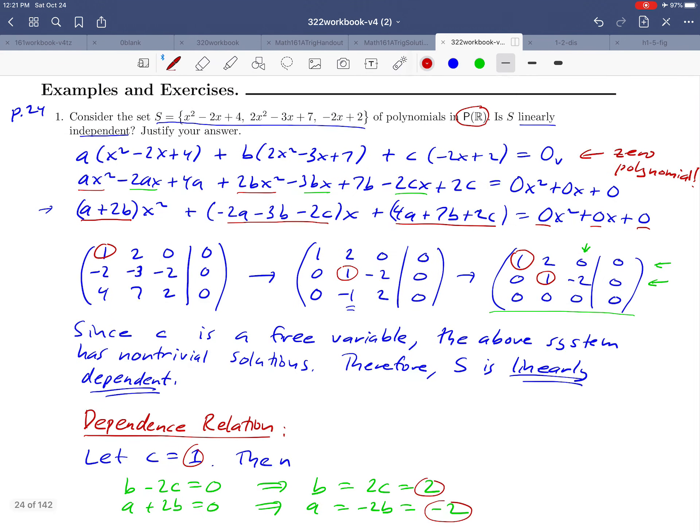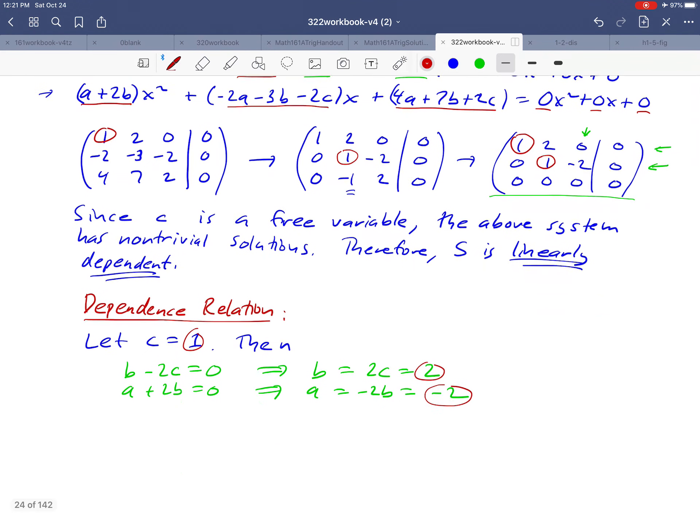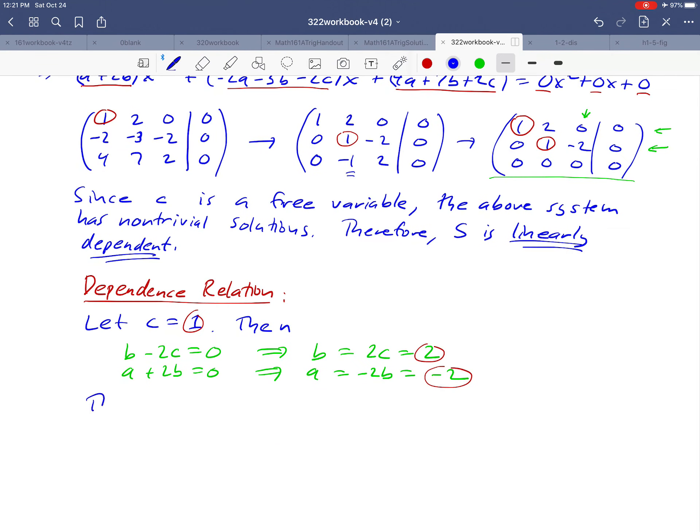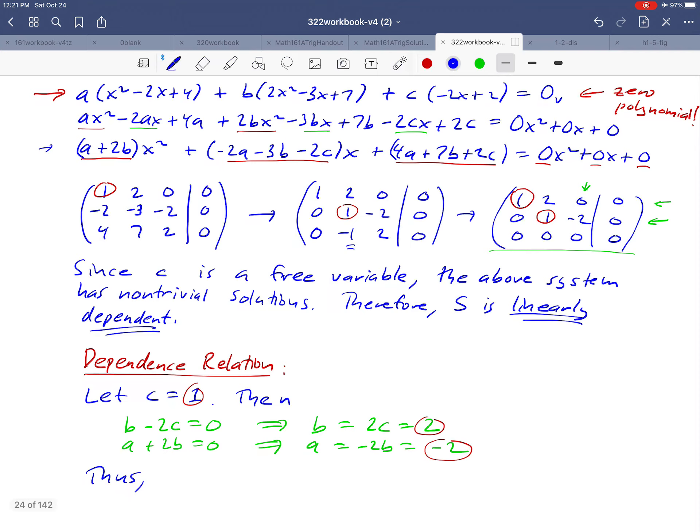And so we know then that if we substitute those three numbers into this first equation that we wrote down, that has to be a true statement. Let's do that. So let's see, can I get that in the screen? Yeah, just barely. So again, we're going to go up here and just substitute in the a, b, and the c. a is negative 2. b is 2. And finally, c is 1 is equal to the zero vector.